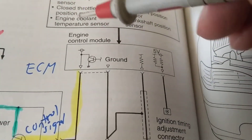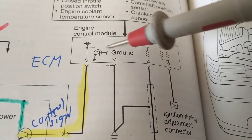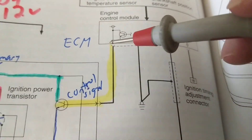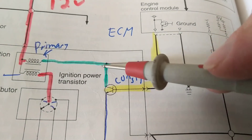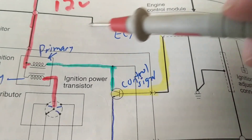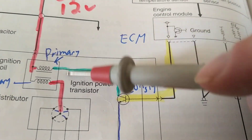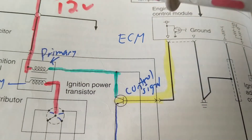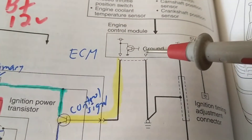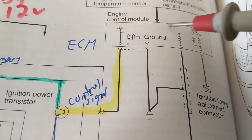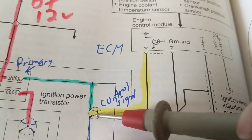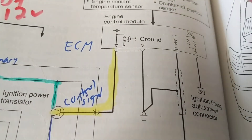These are the inputs the computer takes into consideration. It decides: now I need to make this primary collapse a little earlier, or a little later. That's the determination it has to make. It has all the software inside, and then it controls this output.